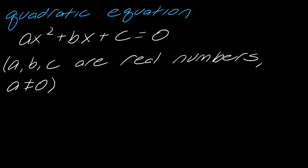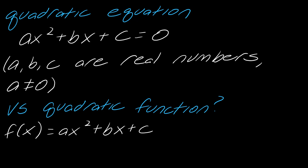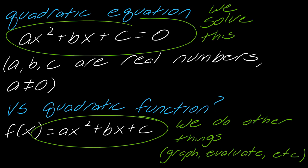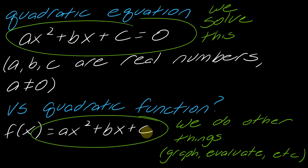Quadratic equations differ from, say, a quadratic function. They look very much the same, but the thing about the quadratic equation is that it's equal to zero. With an equation, you're usually trying to solve it. When you just have ax squared plus bx plus c and you don't have it equal to a number, you're usually trying to do other things — evaluate or graph, for example. But this particular form, we are trying to solve when it equals a number.